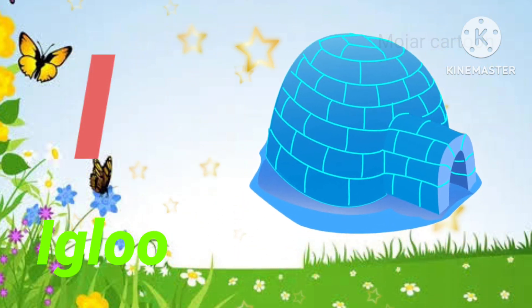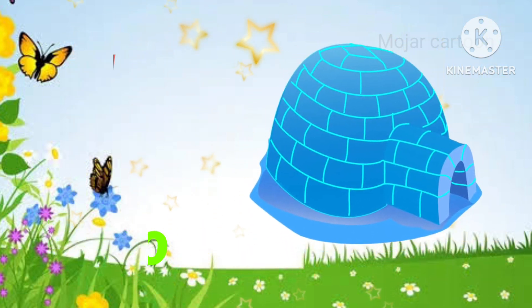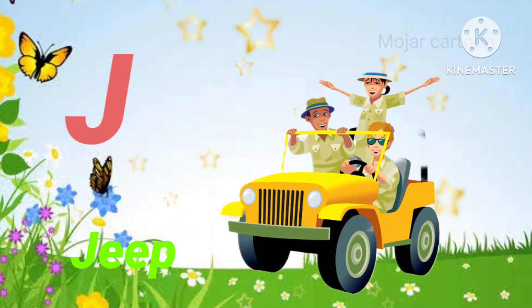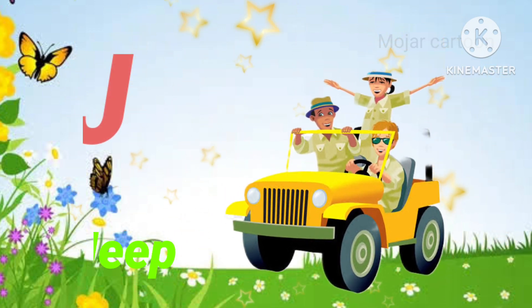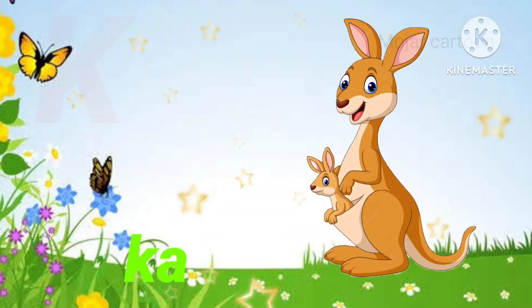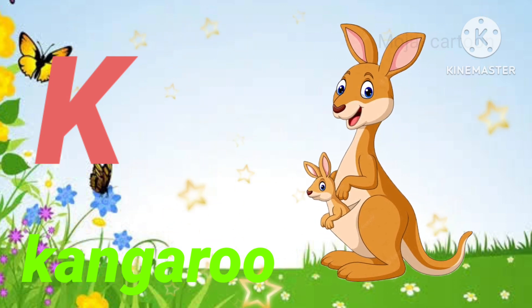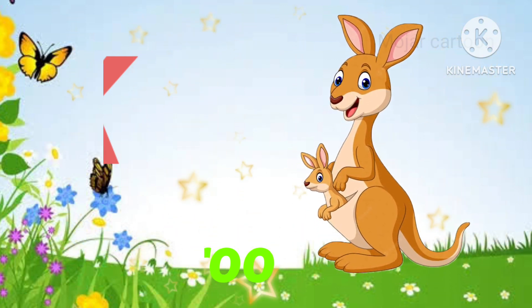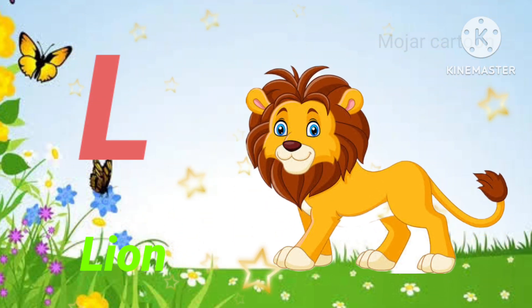I. I is for igloo. K. K is for kangaroo. L. L is for lion.